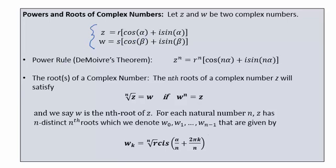Then the power rule, or De Moivre's theorem, says that the nth power of z can be found by raising your modulus to the nth power and multiplying your argument by n.